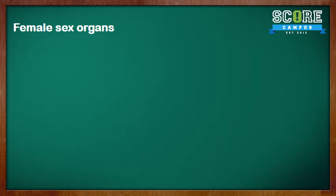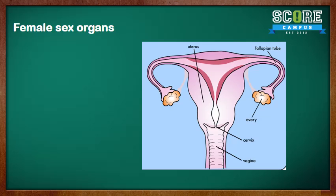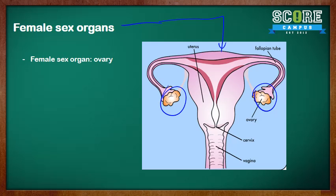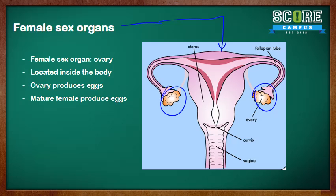Looking at the female sex organ — the ovary is part of the female sex organ. This is the ovary. It is located inside the body of the female. The ovary produces eggs, which are the female reproductive cells. The eggs are the female reproductive cells, and remember, the sperm is the male reproductive cell. Only a mature female can produce eggs.